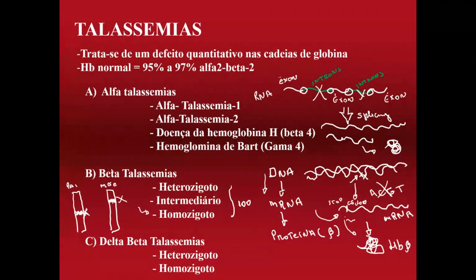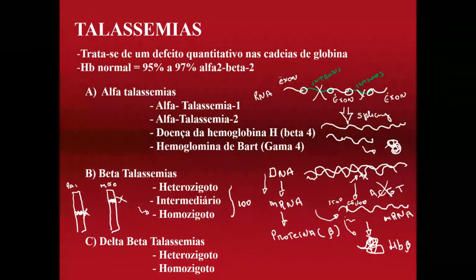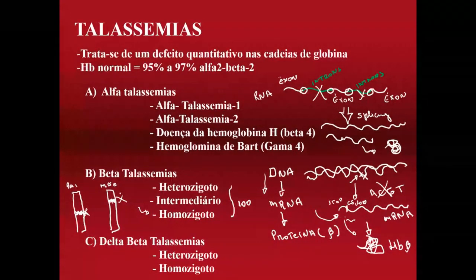O intermediário é uma homozigose em que o problema não proíbe completamente a formação de hemoglobina beta — produz-se menos, mas não há ausência total. É um pouco mais leve em relação ao homozigoto puro. A hemoglobina fica entre 6 e 10 g/dL, dependendo da forma.